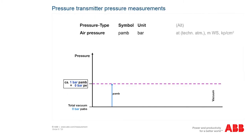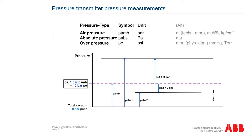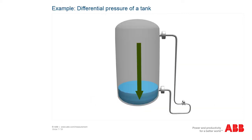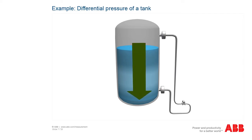One example of a relative pressure frequently specified is the pressure in a tire. If you fill a tire with a relative pressure of 2 bar at an air pressure of 1 bar, the tire has an absolute pressure of 3 bar. Let's take a medium with a certain pressure greater than atmospheric pressure. Here we can measure the absolute pressure or the relative pressure compared with the atmospheric pressure.